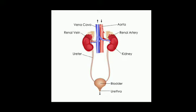This is a diagram of excretory system. You can see in this diagram that the excretory system of human beings basically consists of a pair of kidneys, a pair of ureters, a urinary bladder and urethra. Kidneys are located in the abdomen, one on either side of the backbone.